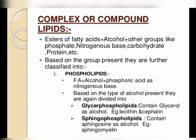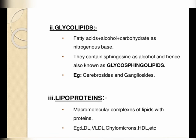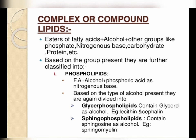Complex or compound lipids are esters of fatty acids with alcohol containing other groups such as phosphate, nitrogenous base, carbohydrate, or protein. Based on the group present, they are classified into phospholipids, glycolipids, and lipoproteins. Phospholipids are a combination of fatty acids, alcohol, phosphoric acid, and a nitrogenous base. Based on the type of alcohol, they divide into glycerophospholipids — containing glycerol as alcohol, examples being lecithin and cephalin — and sphingophospholipids, which contain sphingosine as alcohol, such as sphingomyelin.